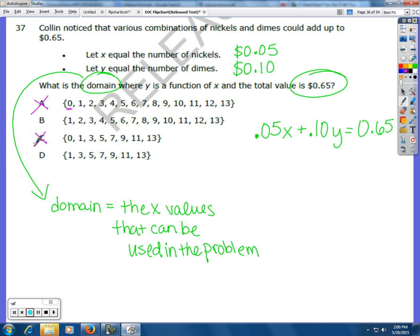Now, if you notice, for B, it has 1, 2, 3, all the way up to 13. For D, it has 1, 3, 5, 7, 9. It only has odd numbers. Now, let's think about that. If we plugged in a 1 for X, I'm just going to make a little table over here.